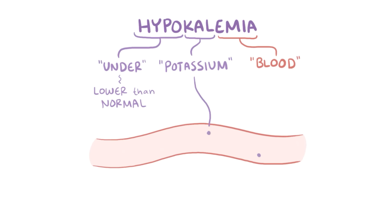With hypokalemia, hypo means under and cal refers to potassium, and emia refers to the blood, so hypokalemia means lower than normal potassium levels in the blood, generally under 3.5 milliequivalents per liter.